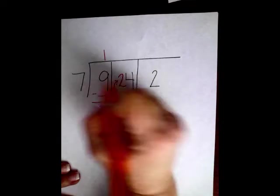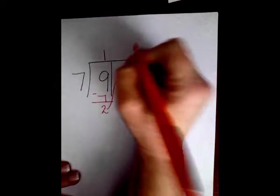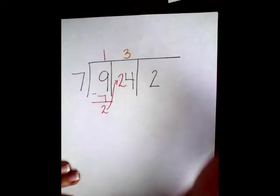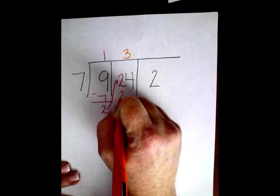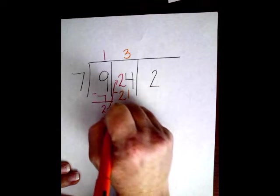Now I'm going to say 7 goes into 24, 3 times. 3 times 7 is 21. I'm going to subtract. I'm going to get 3.